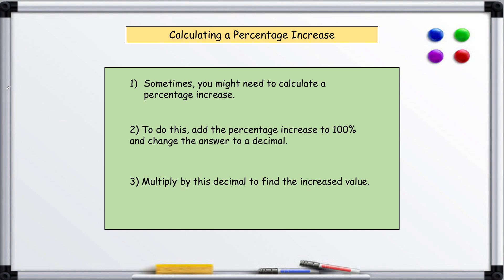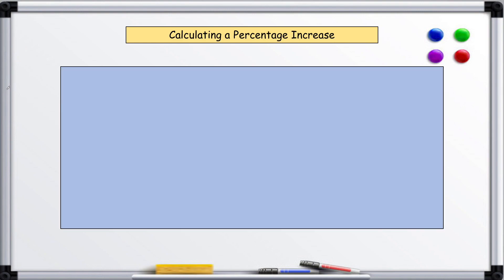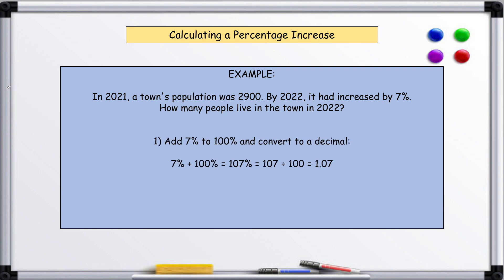Example: In 2021, a town's population was 2,900. By 2022, it had increased by 7%. How many people live in the town in 2022? So we add 7 to 100 and then convert this to a decimal.